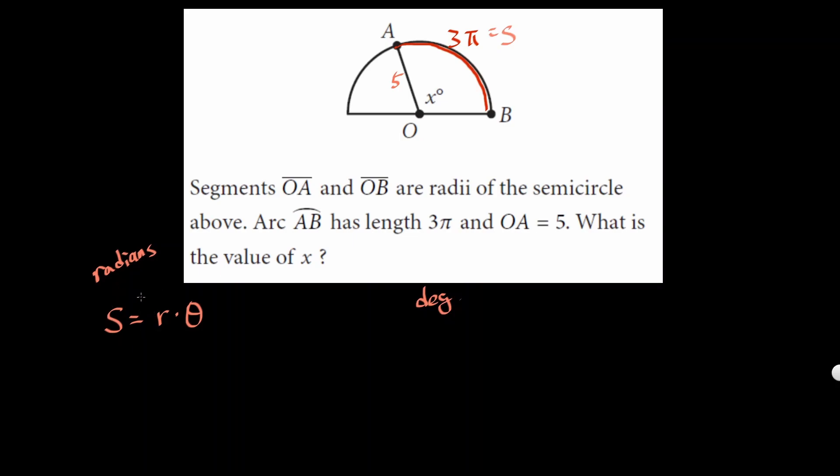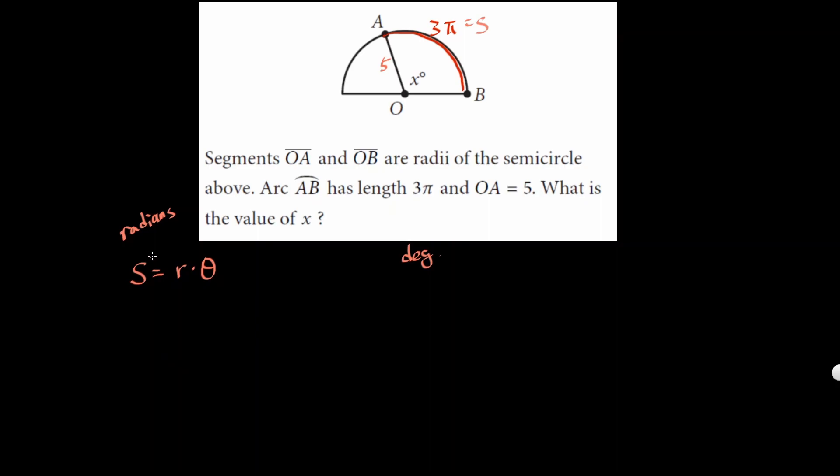Let me just do it in radians form. If you do it in radians form, the arc length is 3π. Set it equal to radius, which is 5, times the theta in terms of radians. Just divide by 5, so theta will be 3π over 5. It's simple as that.